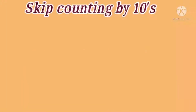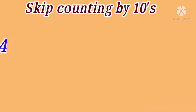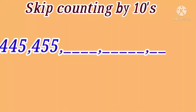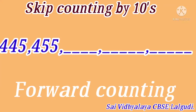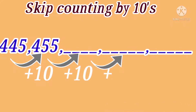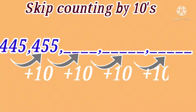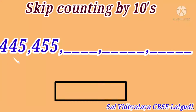Skip counting by tens means there is a gap of 10 numbers between the given numbers. For example: 445, 455. Here the numbers are in forward counting order, so we should add number 10 repeatedly to get the next number.